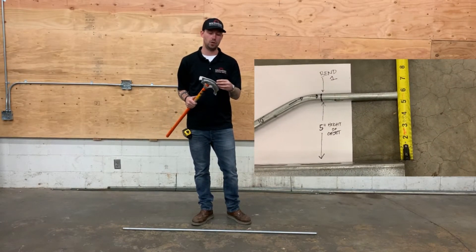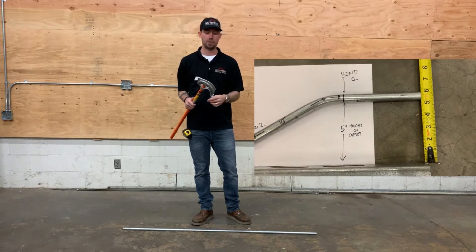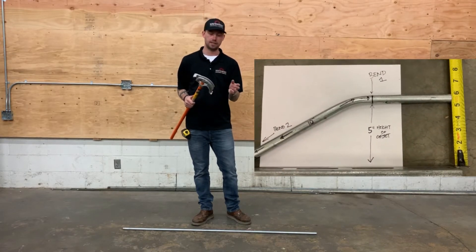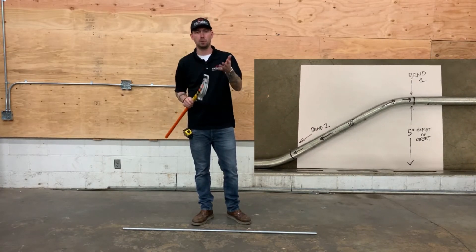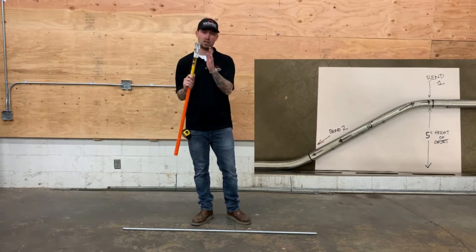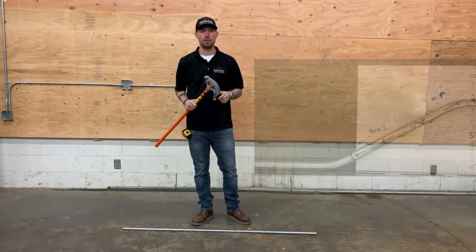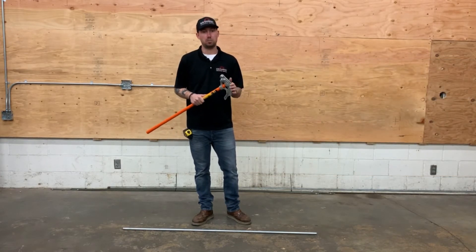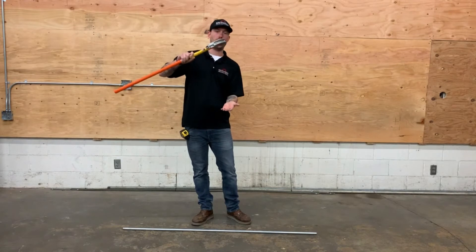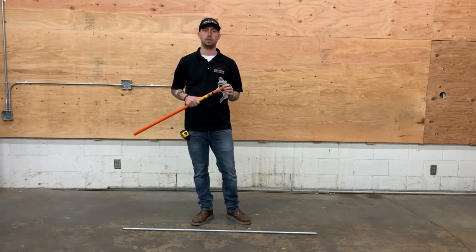Once you get into 10-degree bends, 45-degree bends, or 60-degree bends, those variables change — the distances get closer. For those, you just look up what the multiplier is, multiply your rise, and that gives you the distance between bends.